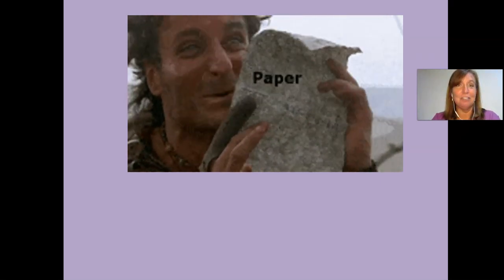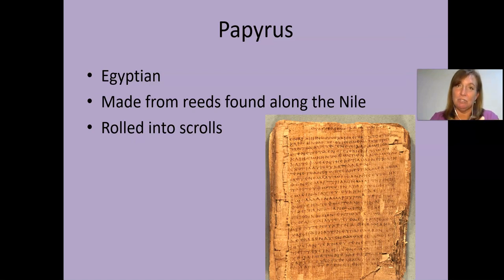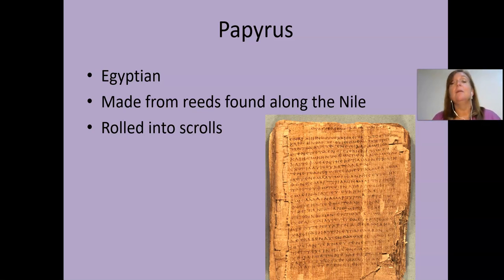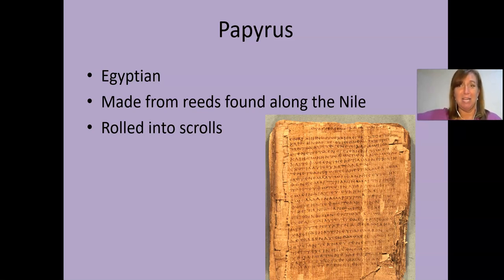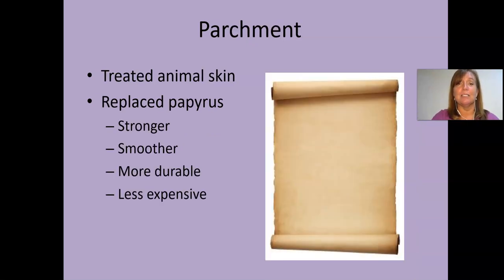We want to start with paper — it all starts with paper. The very first paper used to make books is called papyrus, made with reeds from the Nile River. It was Egyptian and really expensive to get, because if you're in Europe and you want paper, you've got to pay for it to come from Egypt. It didn't last very long, and typically you rolled it into scrolls. So if you hear about things like the Dead Sea Scrolls, typically it's papyrus.